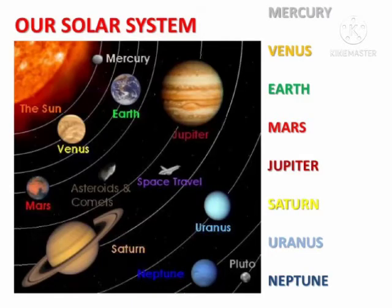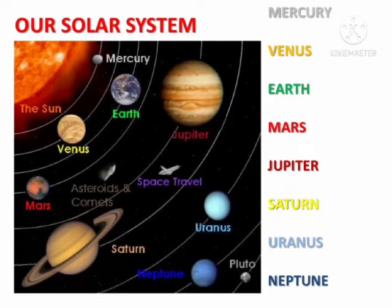Now let us study about the eight planets. There are eight planets in our solar system. Starting from the nearest to the sun, they are Mercury, Venus, Earth, Mars, Jupiter, Saturn, Uranus and Neptune.